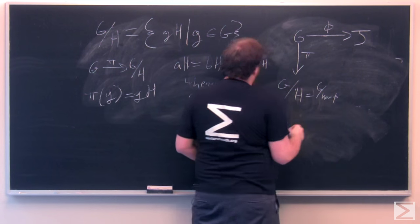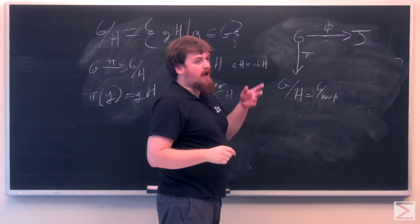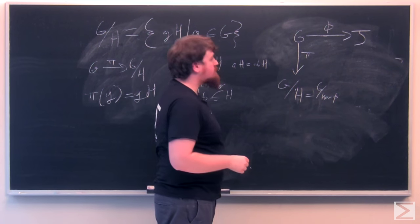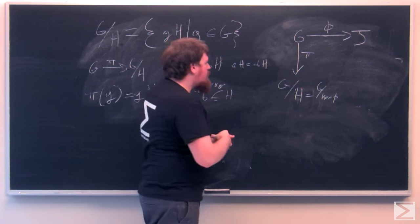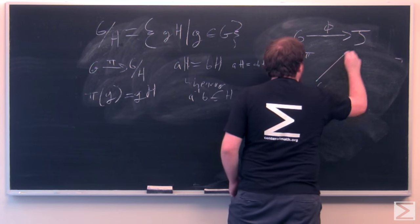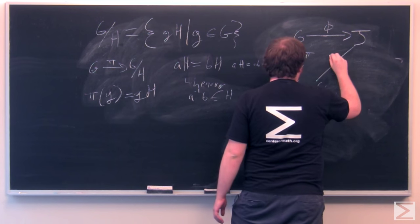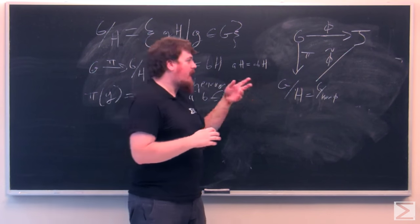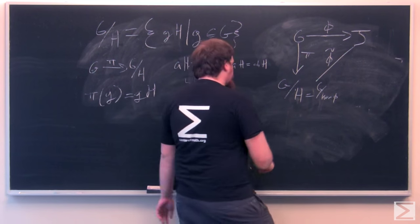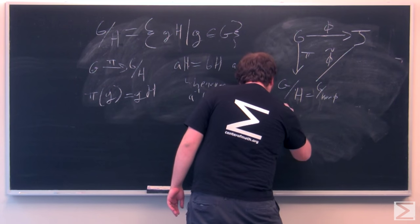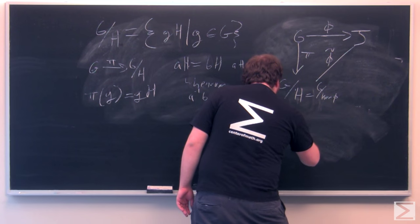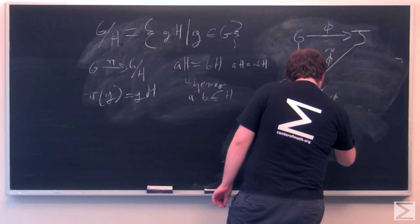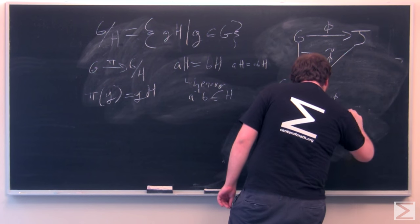This homomorphism is, again, pi. It just sends X in G to XH in G mod H. So what we can do here is we can make another homomorphism defined in terms of phi. We'll call it phi tilde from G mod H to J. And how we're going to define this is we'll say that phi tilde of XH equals phi of X.